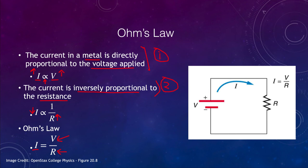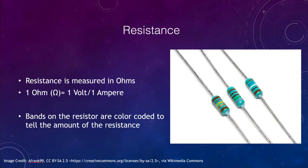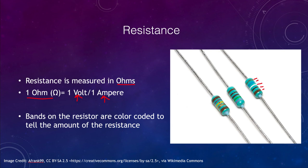Let's look at resistance. Resistance is measured in a unit called ohms, where one ohm equals one volt divided by one ampere. Here we can see examples of resistors. You'll notice they have different colored bands — these bands are color-coded to indicate how much resistance that resistor has. You could look up the color coding to determine the exact resistance value; all of these have differing amounts of resistance based on those banding structures.